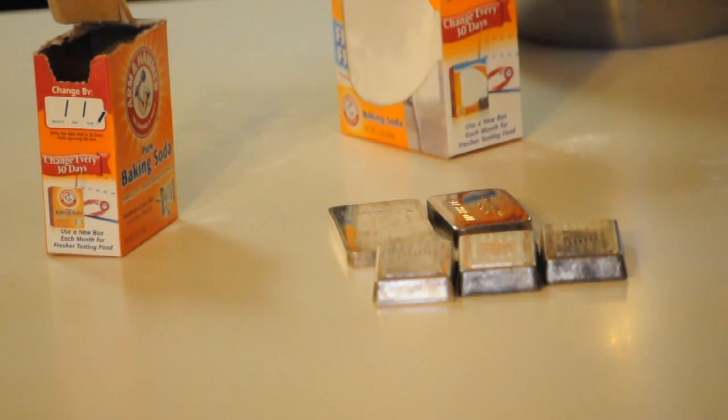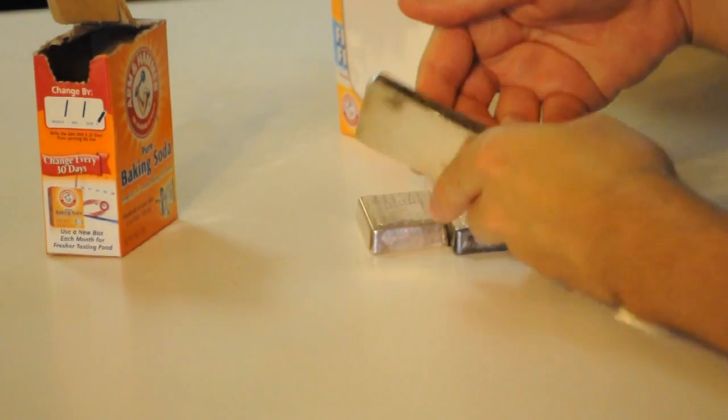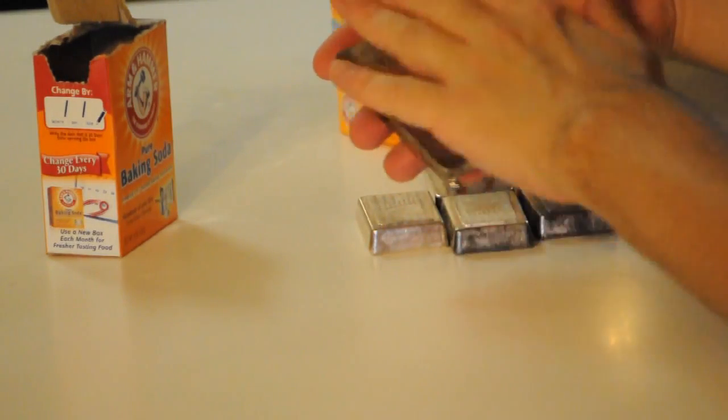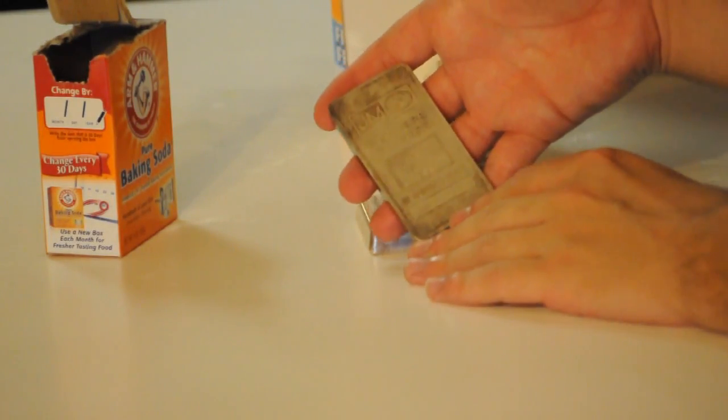That looks great. So now I want to test this out with this piece right here. It's not too badly tarnished, but I think we could get a nice fine shine on the front of it. So let's give it a shot. There's our silver piece. Let's get the hot water on it.